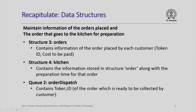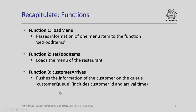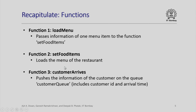Then there was an order dispatch queue which contains the token ID of the order which is ready to be collected. The functions that we had written include load_menu, which will load all the items available on the menu, and set_food_items, which will load the complete menu — in load_menu we set up individual food items. Next, the customer_arrives function actually adds a customer to the customer queue. place_order is another function which gives the token ID and cost assigned for every order that has been placed.